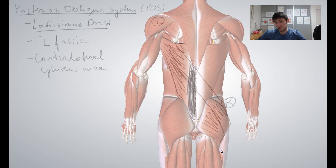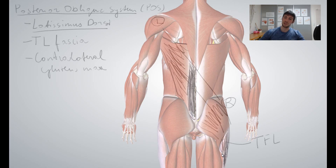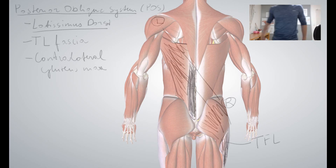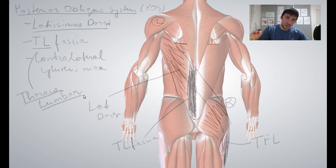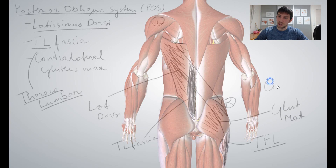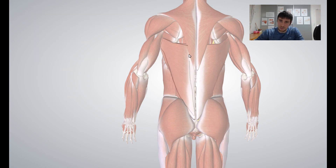It actually goes further down, because the gluteus maximus inserts into the tensor fascia latae on the other side, which continues down the lateral fascia of the thigh. To summarize: one side's latissimus dorsi connects through the thoracolumbar fascia, then into the other side's TFL and gluteus maximus — the contralateral gluteus maximus and contralateral latissimus dorsi — with the thoracolumbar fascia in between.